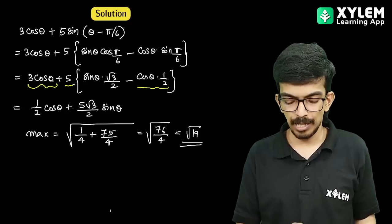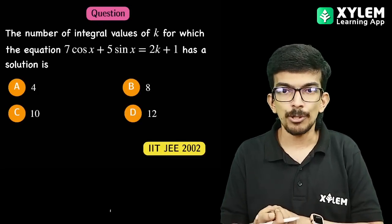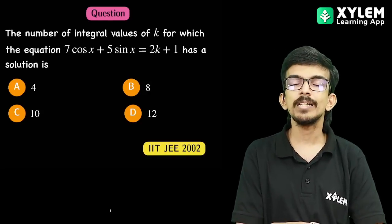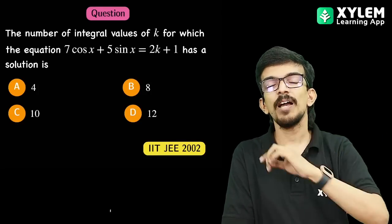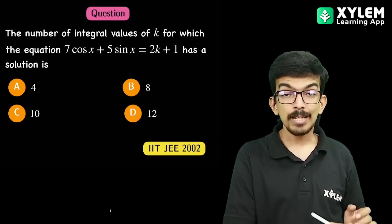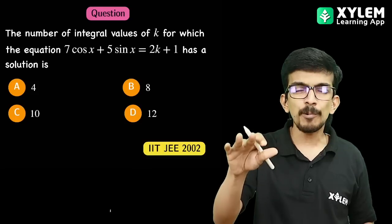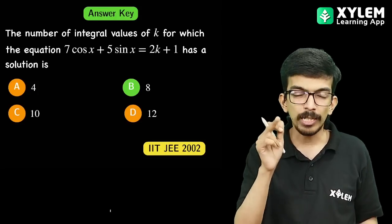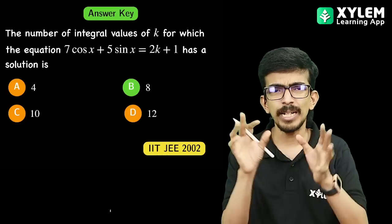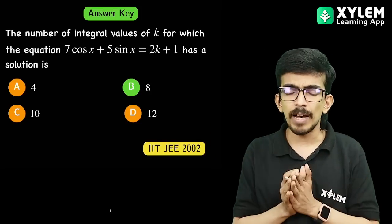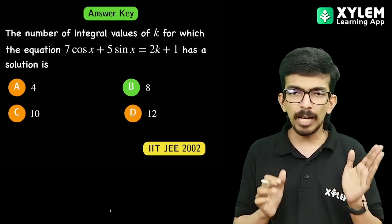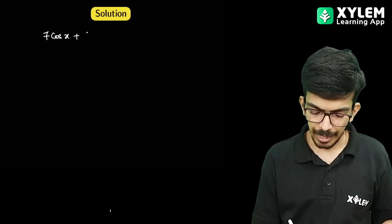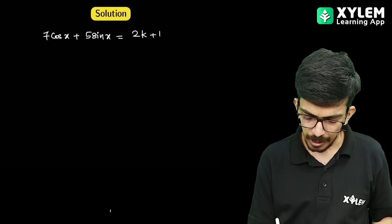The next question is similar: the number of integral values of k for which the equation 7 cos x plus 5 sin x equals 2k plus 1 has a solution. The answer is 8. For the equation to have a solution, 2k plus 1 must lie within the range of 7 cos x plus 5 sin x.